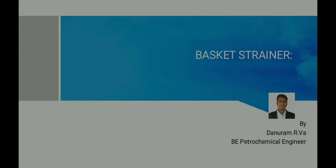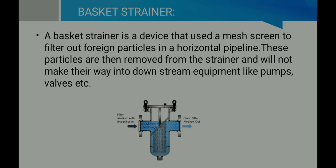Welcome back to my YouTube channel. In this video we are going to see about basket strainers. A basket strainer is a device that uses a mesh screen to filter out foreign particles in a horizontal pipe. It has an internal strainer that looks like a mesh screen — that's why it's called a filter — and it filters out foreign particles in a horizontal pipeline.